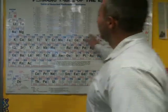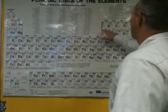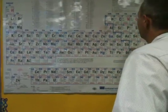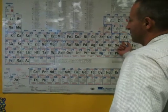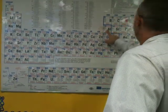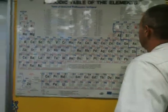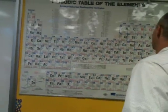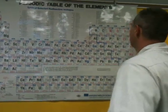Metals appear on the left side of the periodic table. The metalloids are on the stair-step line — everything sitting on the line is a metalloid, and everything touching the bottom of the staircase is a metalloid, except for aluminum and polonium, which are still metals. Everything to the right of the stair-step line is a non-metal.